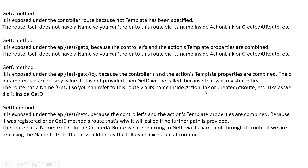Inside GET D we refer to GET C by name. The GET D method is exposed under API test GET C because the controller and action template properties are combined. Since it was registered prior to GET C, it will be called if no further path is provided. The route has the name GET D. In CreatedAtRoute we are referring to GET C by name — if you replace the name then it would throw an exception at runtime. So you can use both the name property and the template property, and that is the difference between them. Thank you for watching.